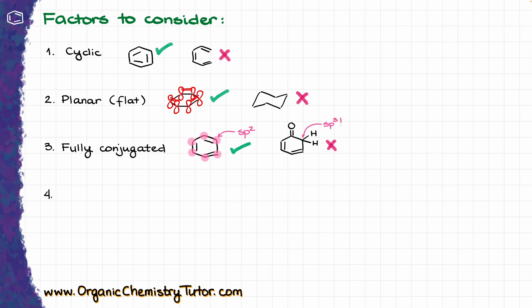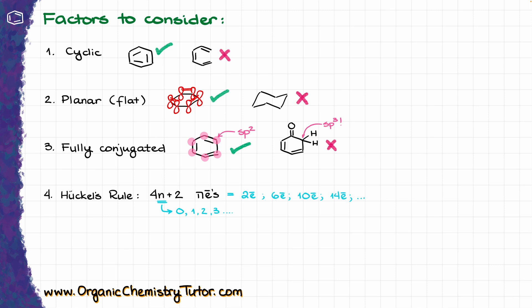And finally, we are going to check for the number of electrons within our conjugated system, which is sometimes referred to as Huckel's rule, and it states that the aromatic system needs to have 4n plus 2 electrons in the pi system. The important thing to keep in mind here is that the number n does not correspond to anything within the molecule itself — n is just a whole number from 0 to infinity. So your n can be 0, 1, 2, 3, etc., which means that the number of electrons for an aromatic compound is going to be 2, 6, 10, 14, etc.